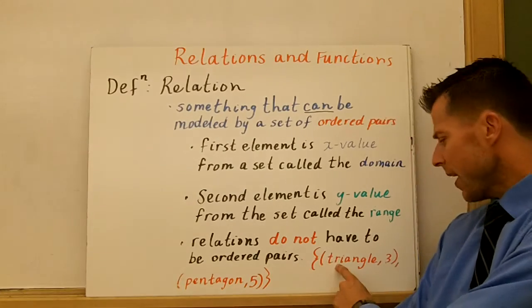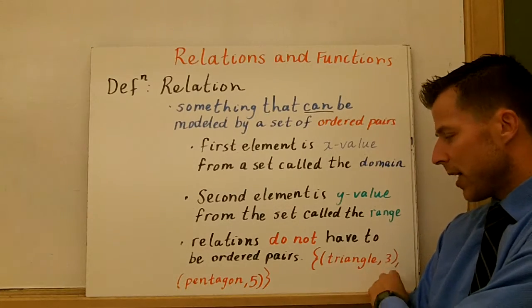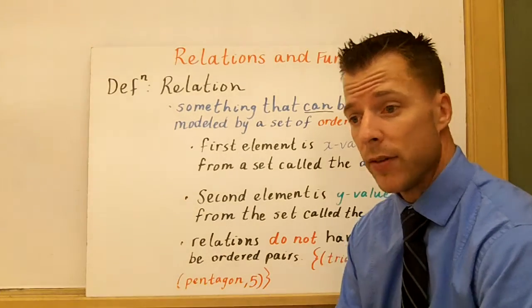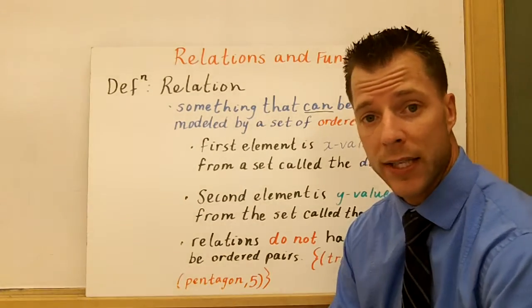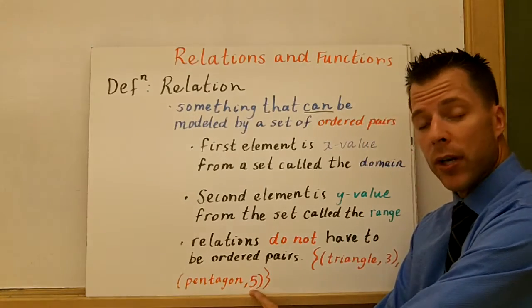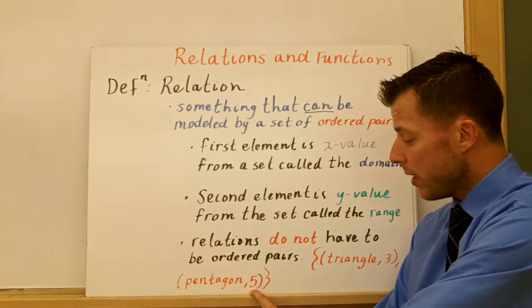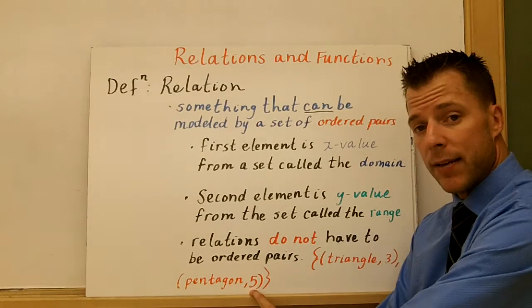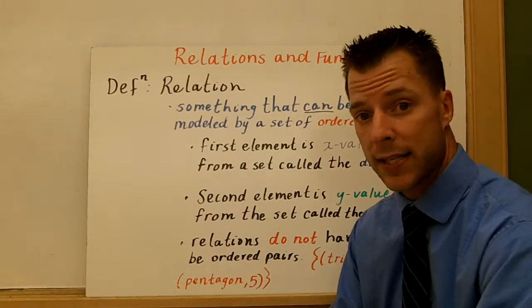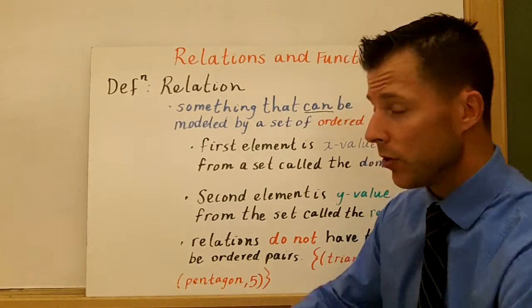Most commonly you'll see them as ordered pairs. But for example, you can have triangle comma 3, pentagon comma 5. My set could be here of polygons for the x part, and the y part here would be considered the number of sides that that polygon has. So obviously if you think of an x chord, you can't graph a pentagon on the x axis, so that's no longer really an ordered pair.